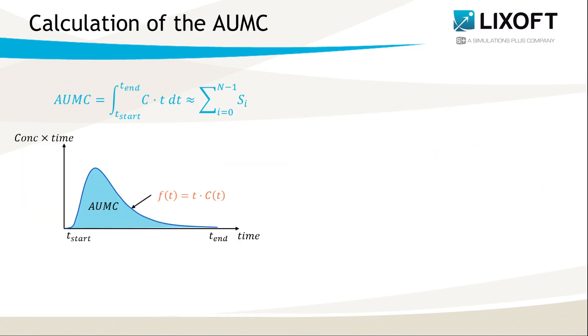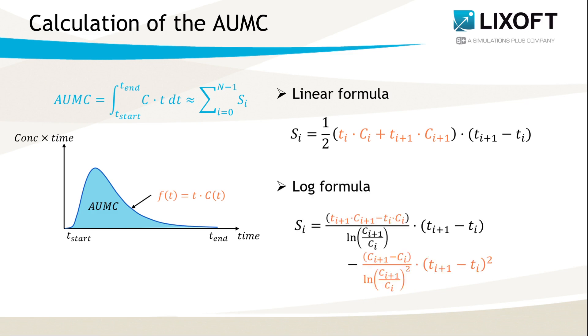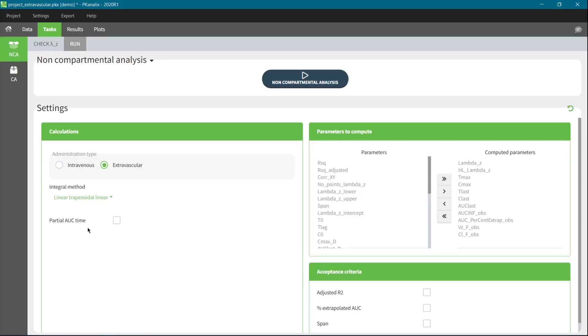The same trapezoidal method with linear and logarithmic approaches is used to compute the area under the first moment curve, which is the concentration multiplied by time versus time. The linear formula is similar to the one for the AUC, with the additional multiplication of concentration by time. The logarithmic formula is more complex and contains now two terms, but the derivation of these two terms is out of the scope of this video.